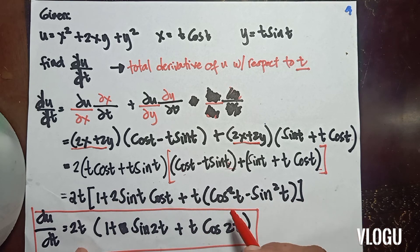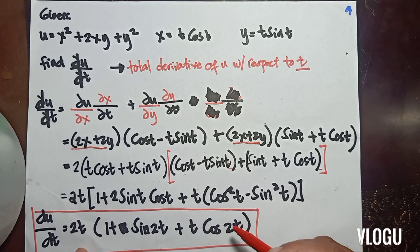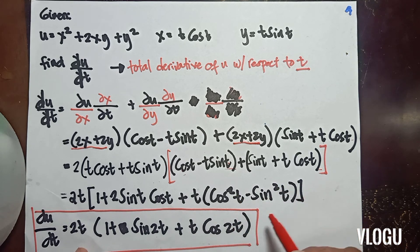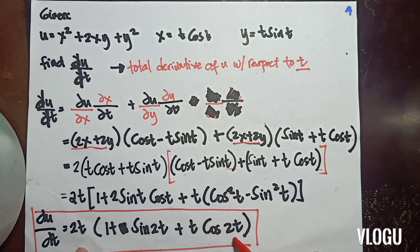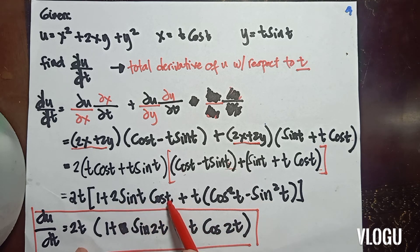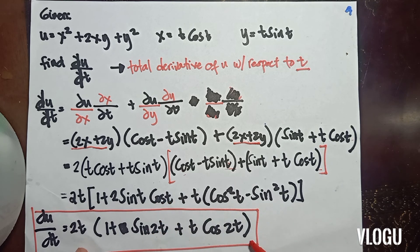From the double angle formula: cos²(t) − sin²(t) is equivalent to cos(2t). And 2·sin(t)·cos(t) is equal to sin(2t). That is now your final answer.